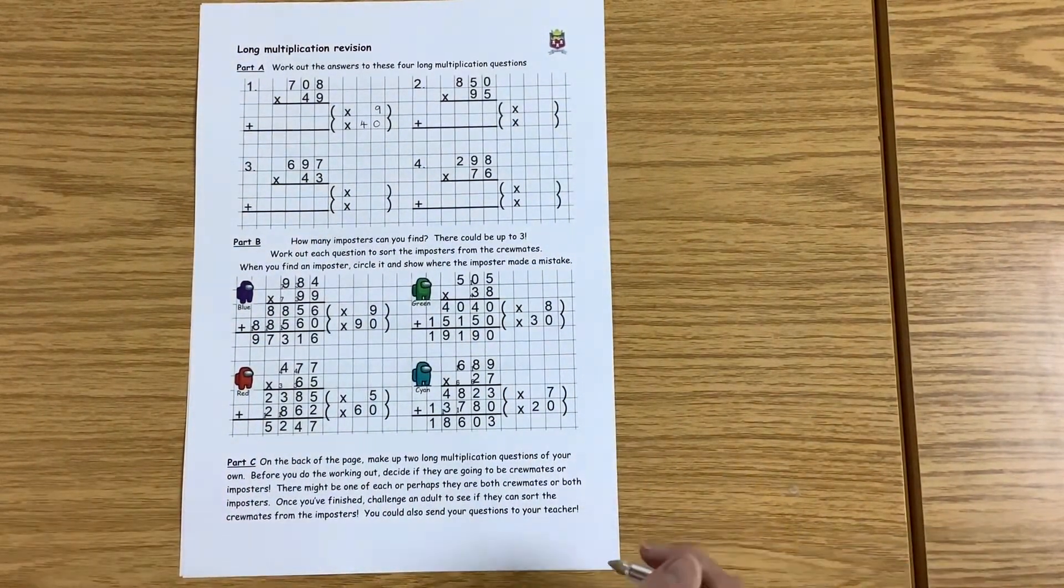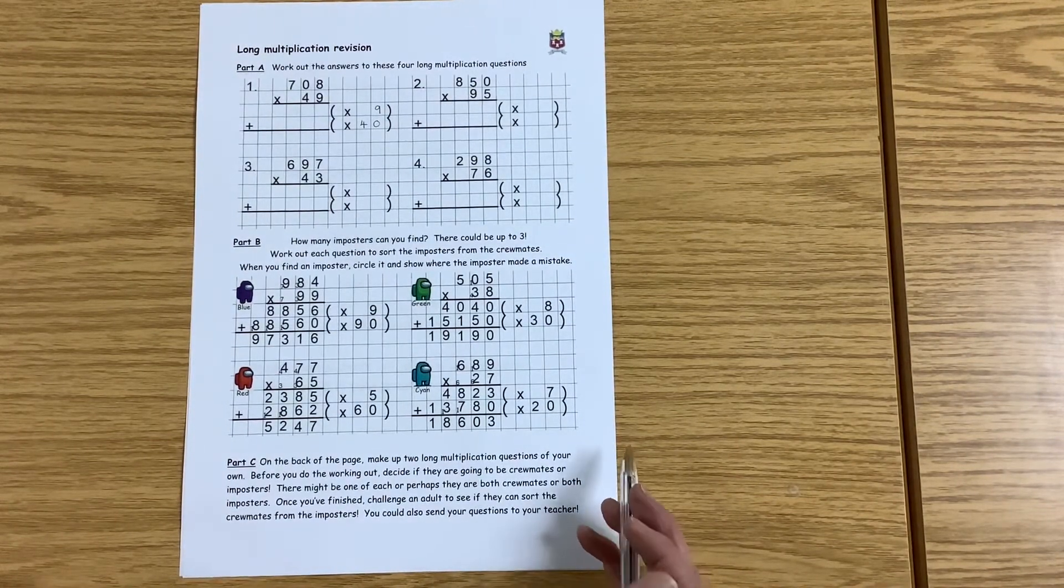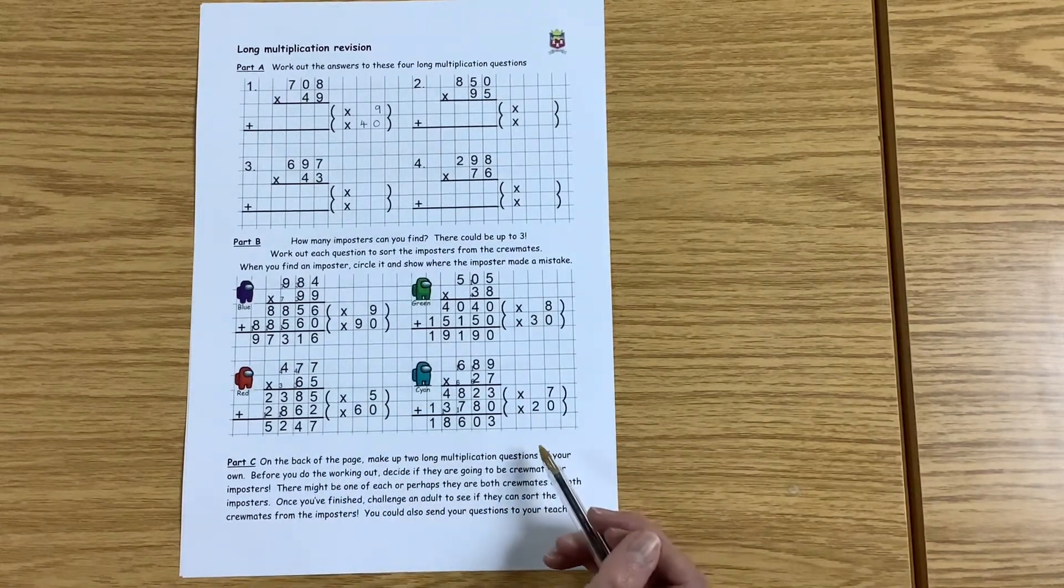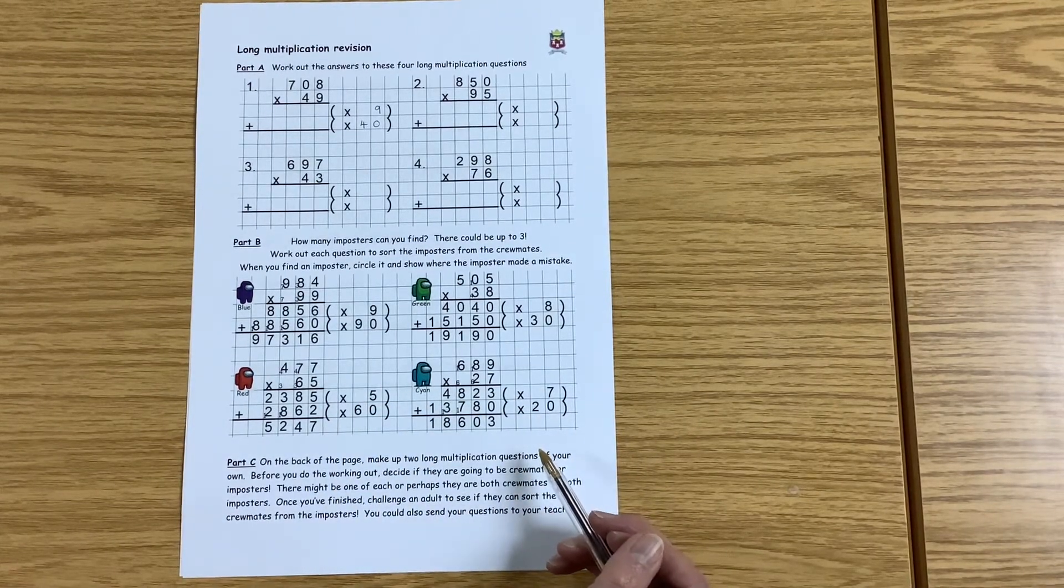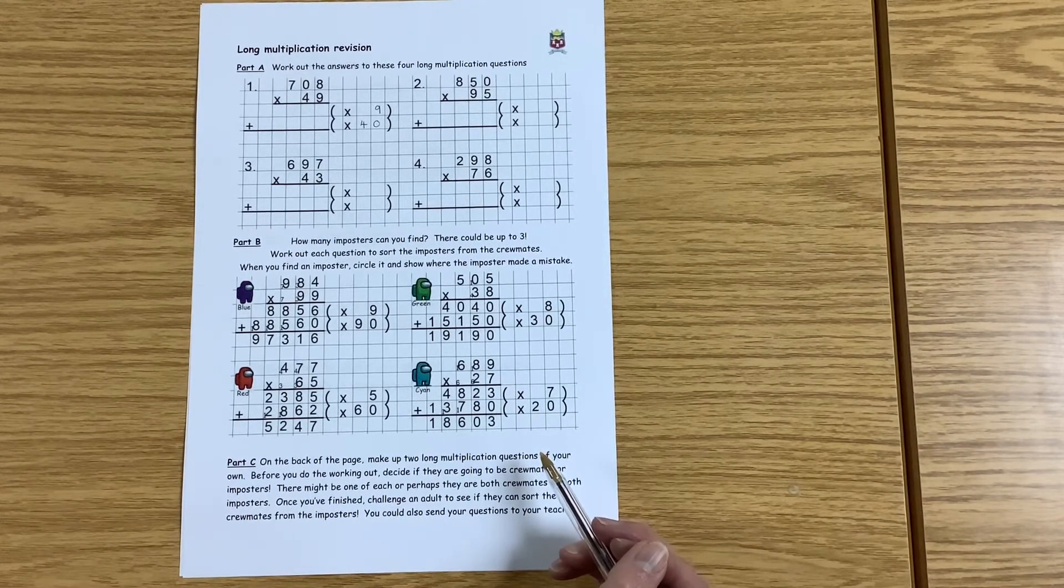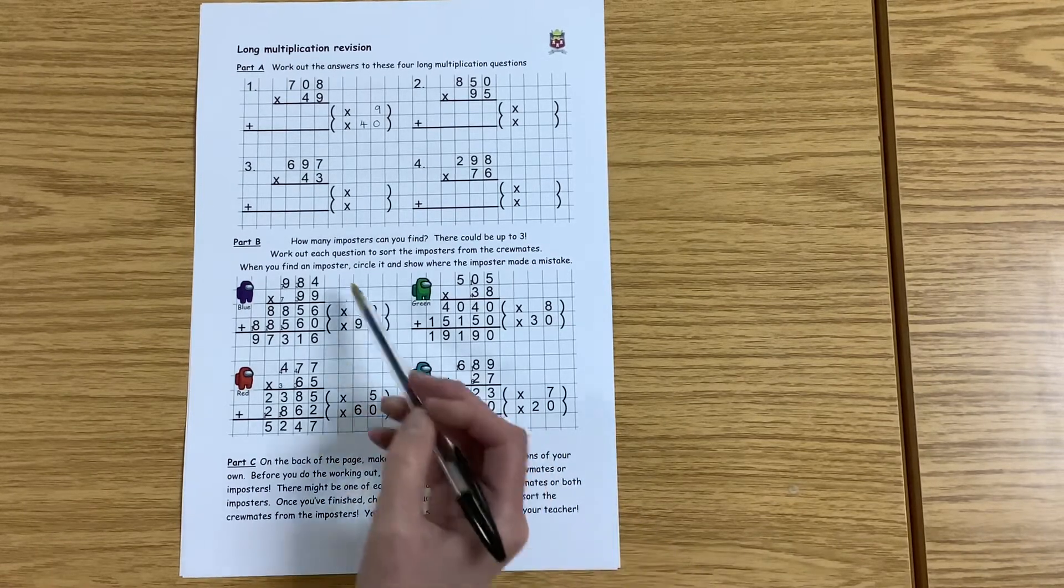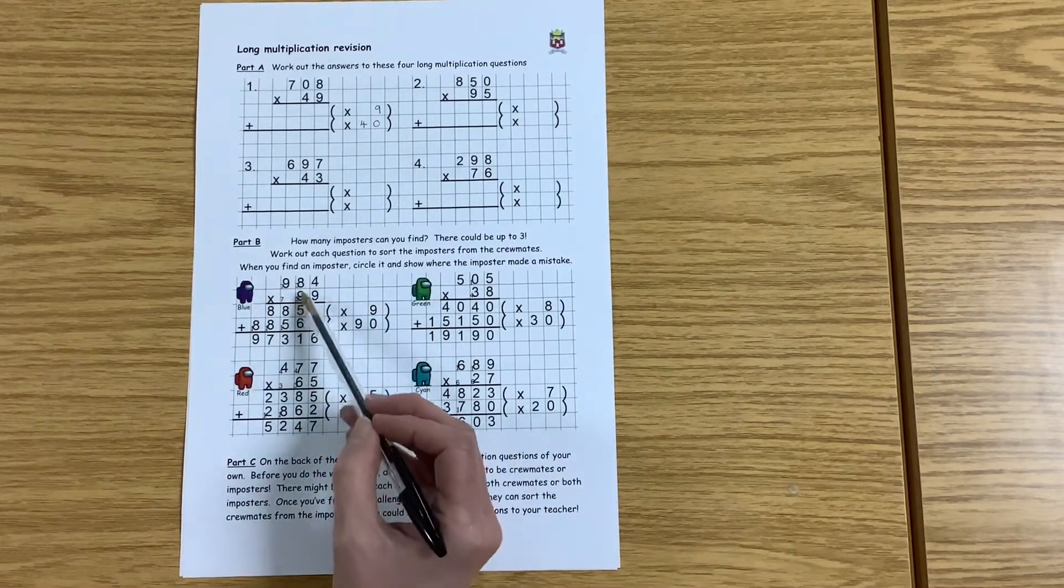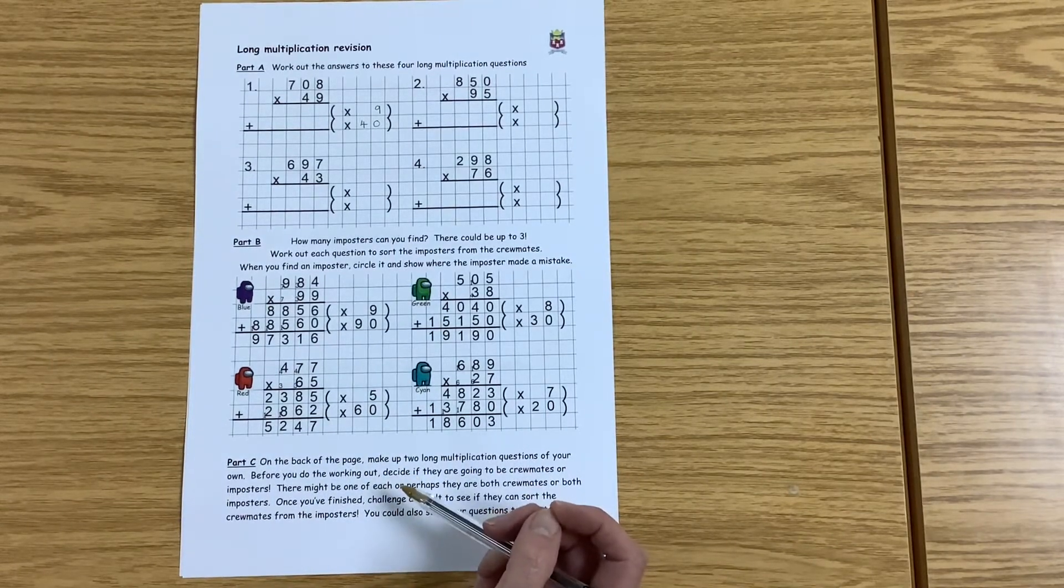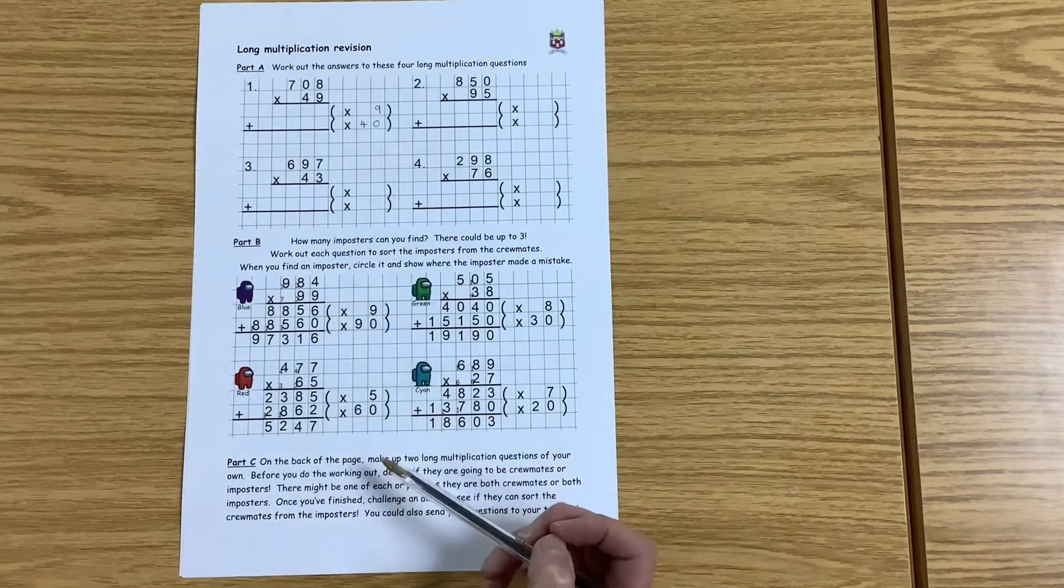Then part B, the imposters are back. I have given you four questions with four different imposters. We've got blue, green, red and cyan. But some of them are imposters and some of them are crewmates. Can you work out which one is which? I have already done out the questions for you. The carried numbers and everything, it's all there.